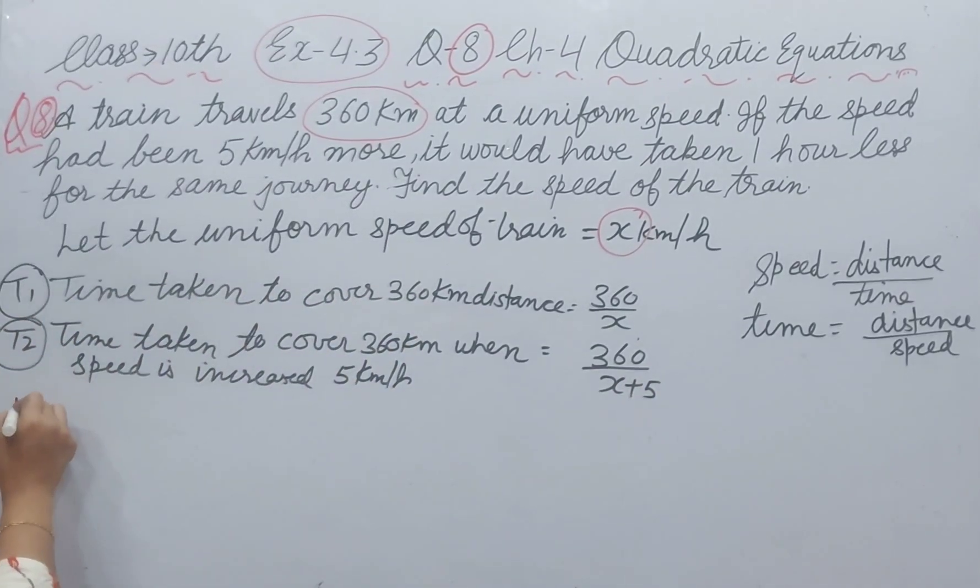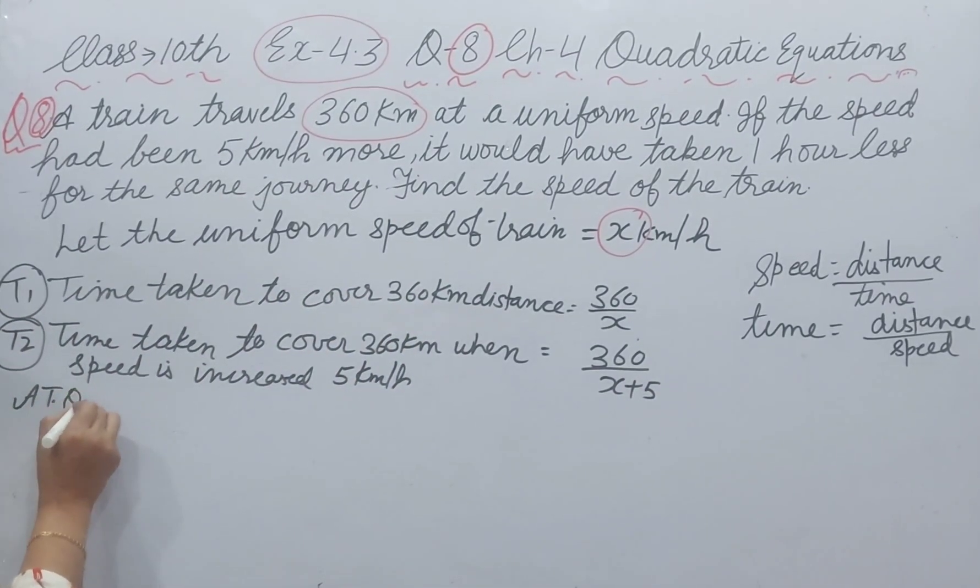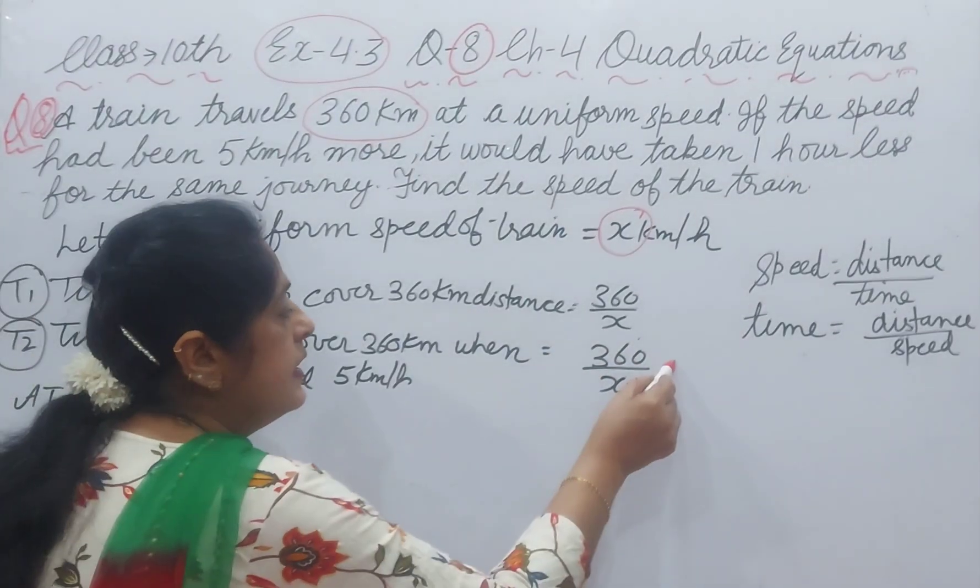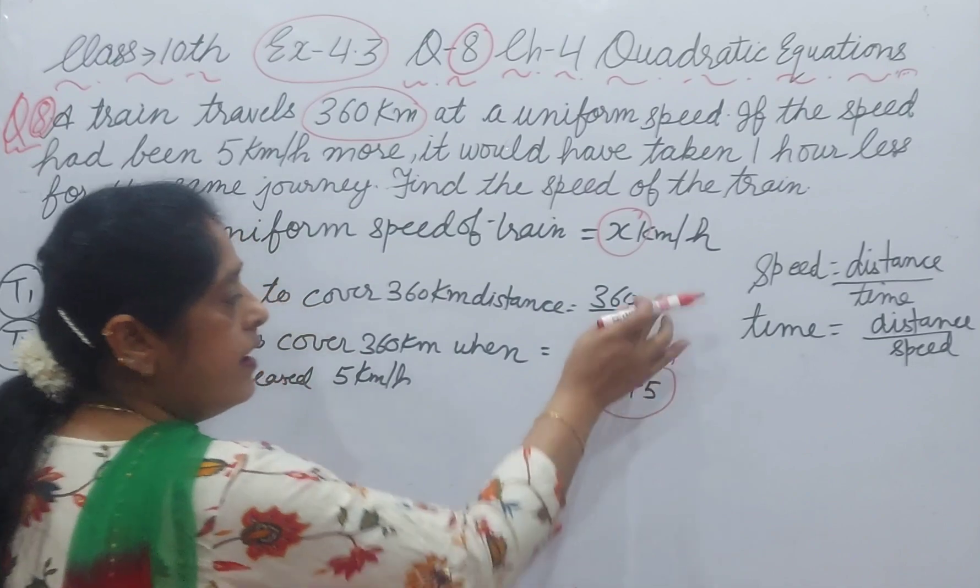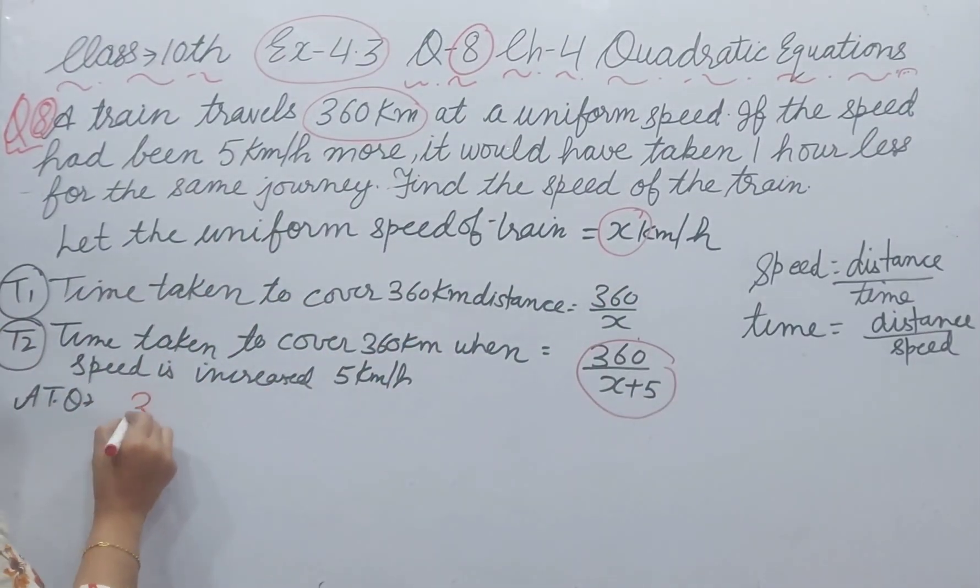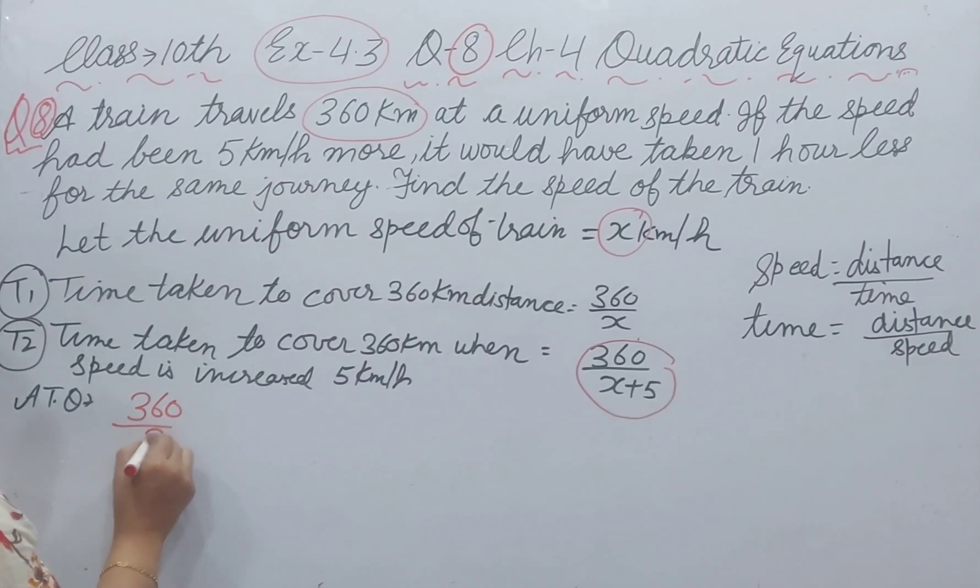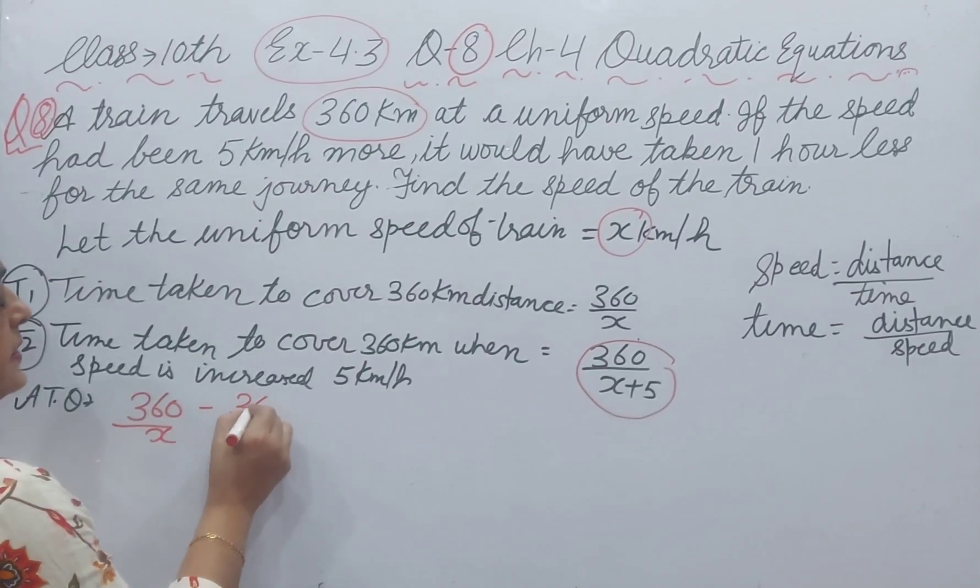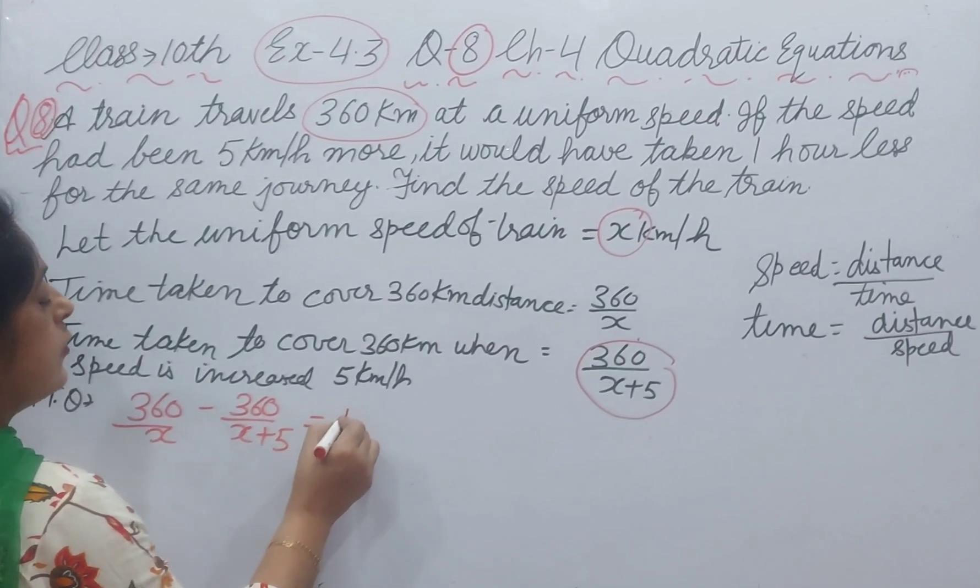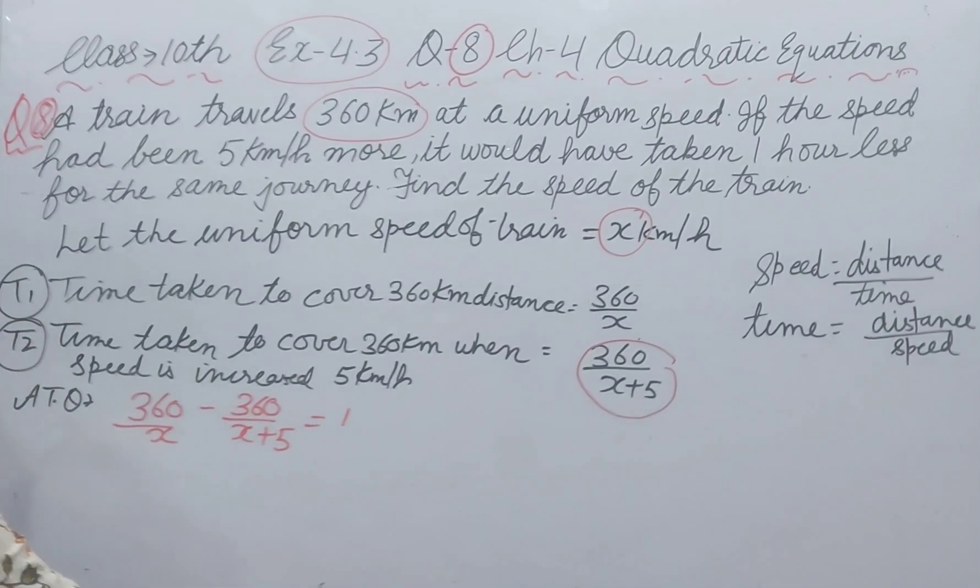According to question, this time is 1 hour less than this time. So 360 upon x minus 360 upon x plus 5 equal to 1. Now, we will solve.